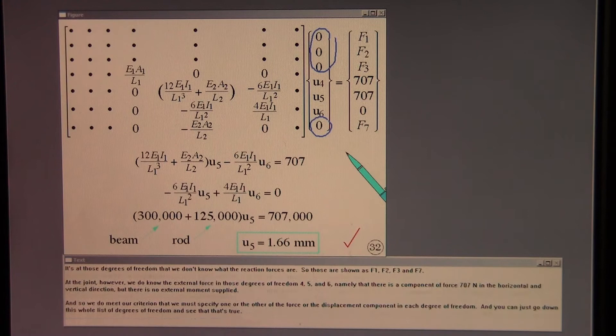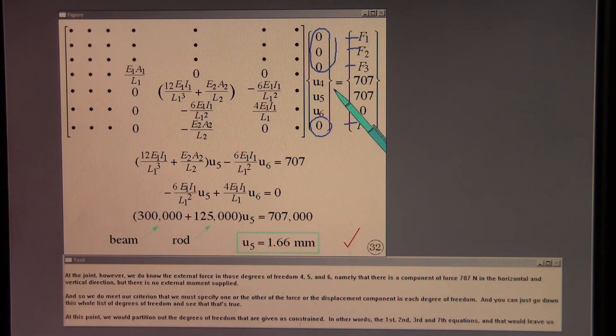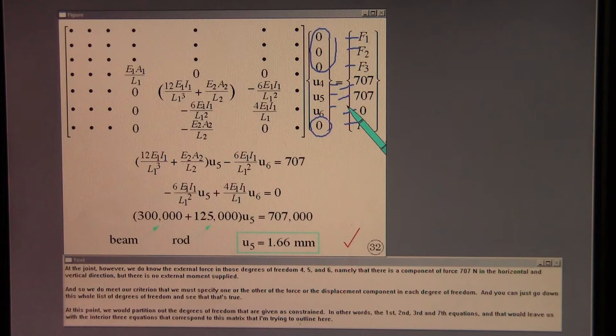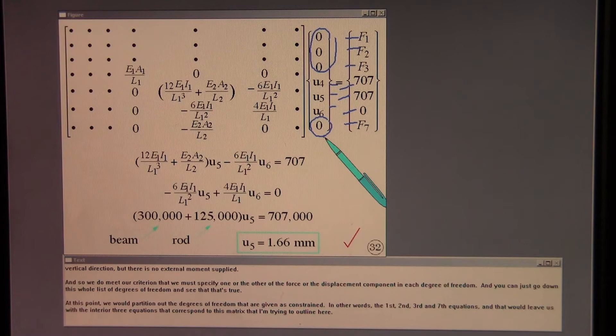It's at those degrees of freedom that we don't know what the reaction forces are. So those are shown as F1, F2, F3, and F7. At the joint, however, we do know the external force in those degrees of freedom 4, 5, and 6. Namely that there is a component of force, 707 Newtons, in the horizontal and vertical direction, but there is no external moment applied. And so we do meet our criterion that we must specify one or the other of the force or the displacement component in each degree of freedom. And you can just go down this whole list of degrees of freedom and see that that's true.